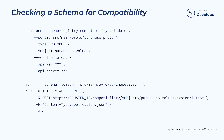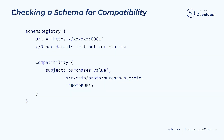Finally, you can check if the changes you've made to a schema are compatible with the subject and current compatibility setting. Here's an example doing this check using the Confluent CLI, as well as one using the Schema Registry REST API, and a final example showing you how to do the check using the Schema Registry Gradle plugin configuration.